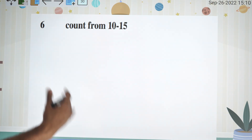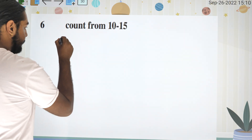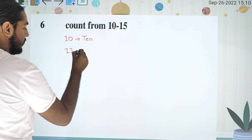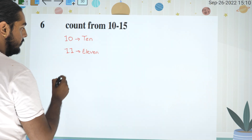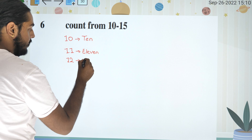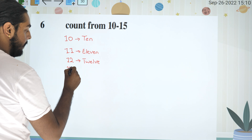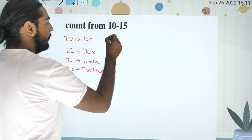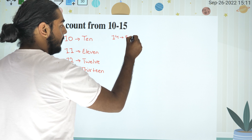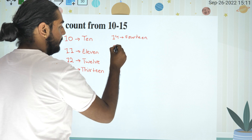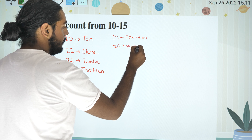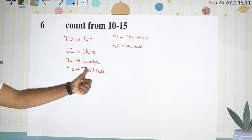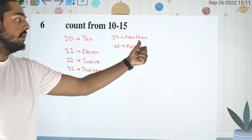Okay, let's count from ten to fifteen. Ten. Eleven — E-L-E-V-E-N, eleven. Twelve. Thirteen. Fourteen. And finally fifteen. TN: 10, LEVN: 11, TWELV: 12, THIRTEN: 13, FOURTEN: 14, and FIFTEN: 15.